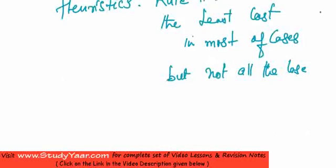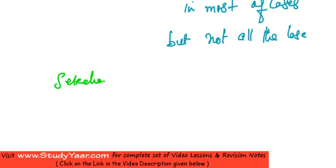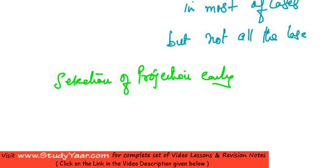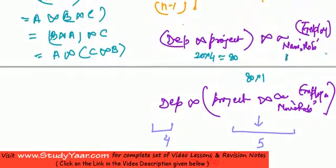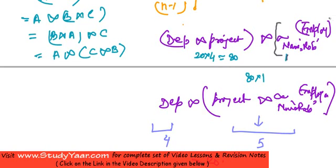A common heuristic is to do selection or projection early. Just realize what we have done here — I first found out the name of the employee Rob from the employee table. I first found out the details of Rob from my table. Had I done it at the last, let's suppose the selection was applied at the end.